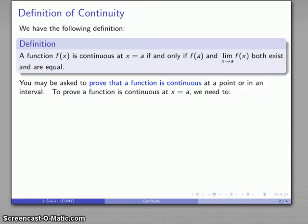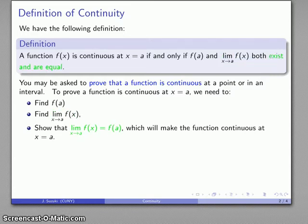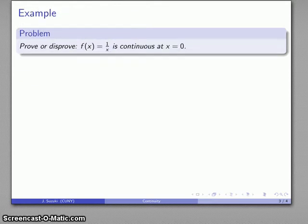In this particular case the definition of continuity has three important components. First off we need to find f of a and make sure that it exists. We need to find the limit as x approaches a of f of x and then we want to show that the limit and the function value are equal in which case the function will be continuous, or possibly the limit and the function value are different in which case the function will be discontinuous at the point in question. And just to make the problems interesting we won't commit ourselves in the question to whether or not the function is or is not continuous.